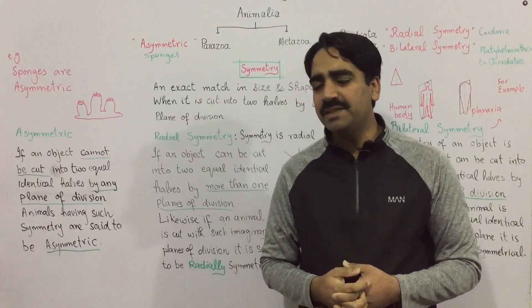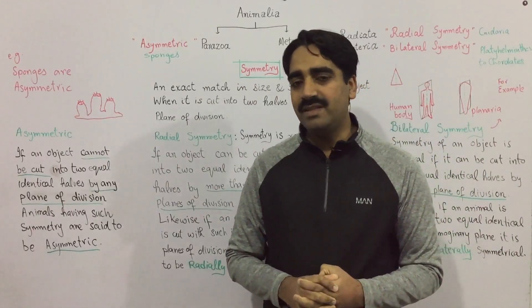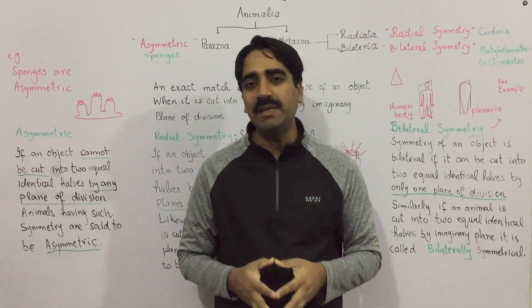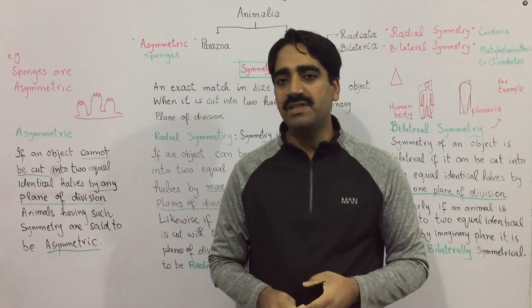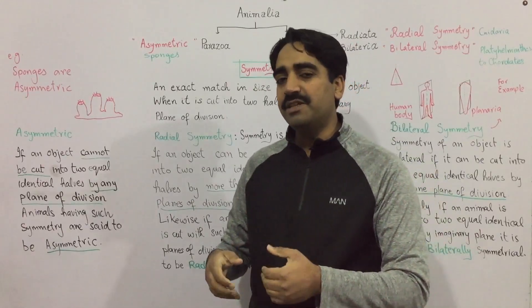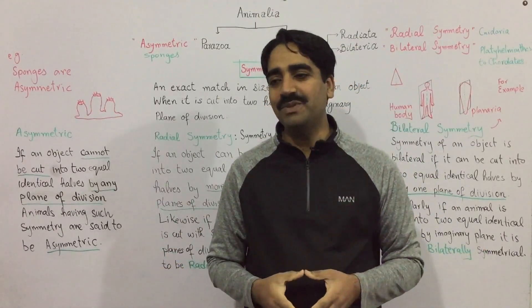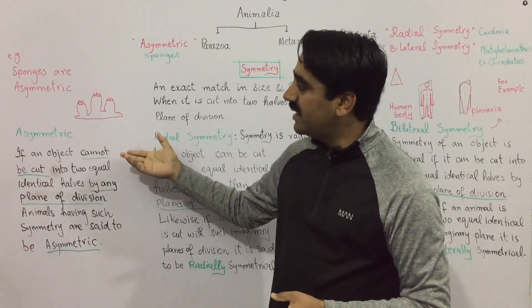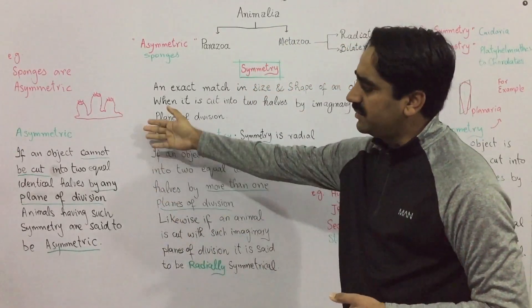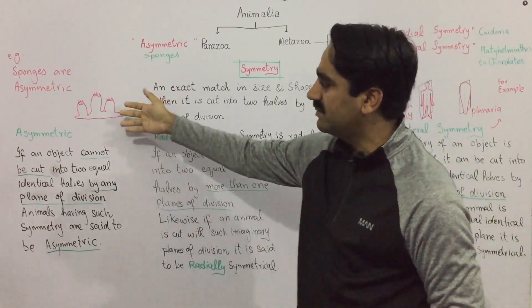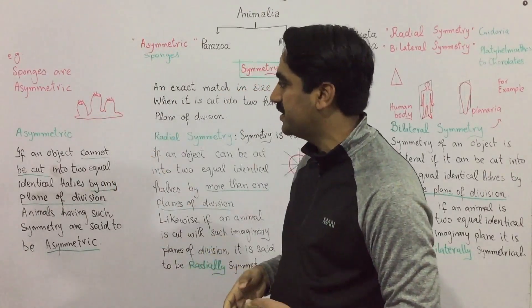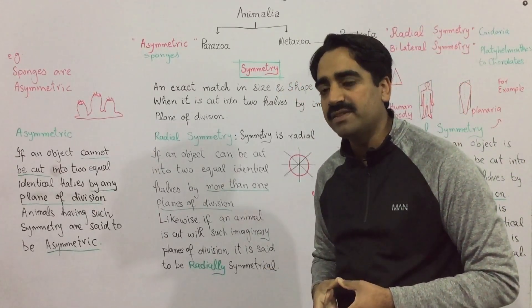What is the symmetry of sponges? What is the symmetry of the parazoa? They have no symmetry. They cannot be cut into two equal identical halves by any plane of division. Such animals are not placed in either grade Radiata or grade Bilateria. They are separately considered — they are asymmetric. The parazoa are asymmetric animals. There is no center plane where you can cut them into two equal identical halves, because they do not have a definite shape.